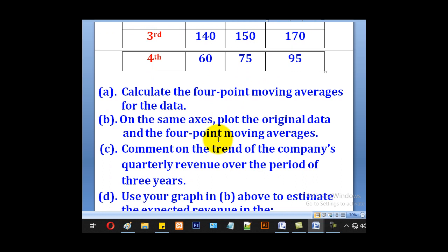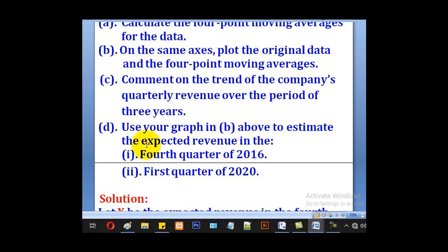They want us to calculate the 4 point moving averages for the data, part B, on the same axis plot the original data and the 4 point moving averages. Part C, comment on the trend of the company's quarterly revenue over the period of 3 years. And lastly, use your graph to estimate the expected revenue in the 4th quarter of 2016 and 1st quarter of 2020.